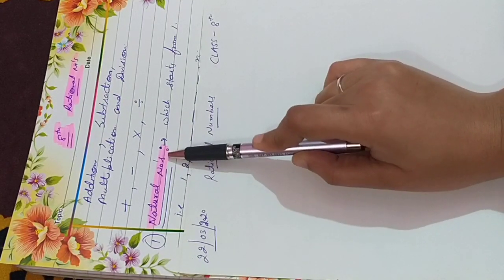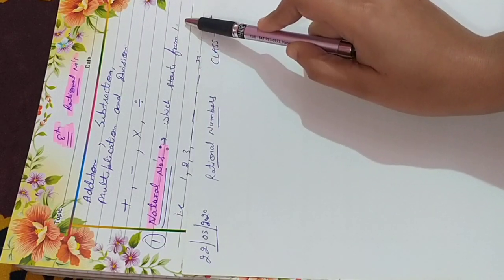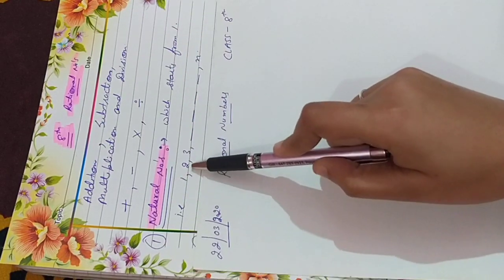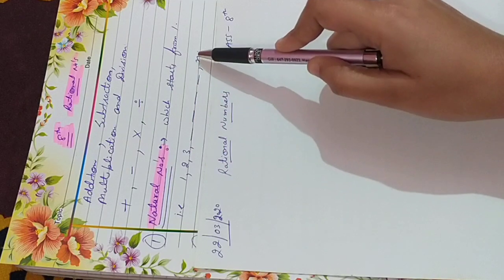Natural numbers which starts from 1. For example, 1, 2, 3 up to N.